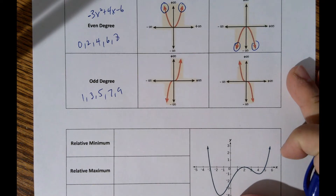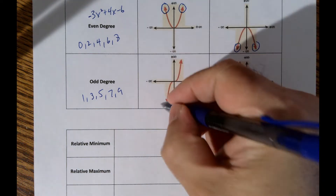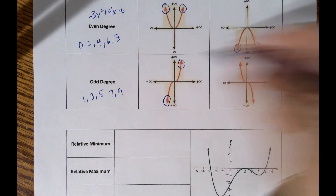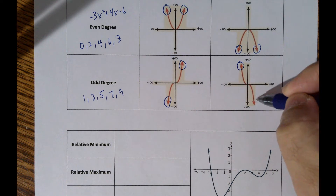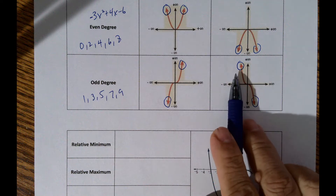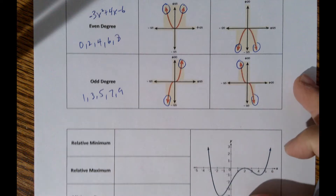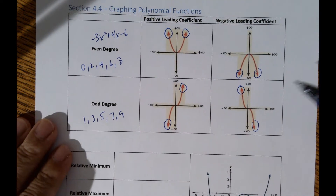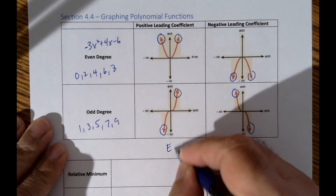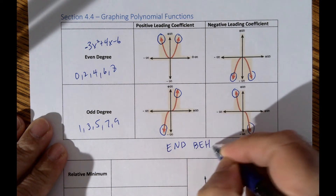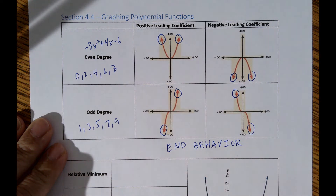For an odd degree with a positive leading coefficient, the left side points down and the right side points up. With a negative leading coefficient it's the opposite: left side goes up and right side goes down. This is essentially describing end behavior.